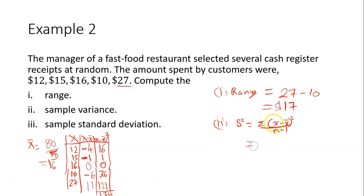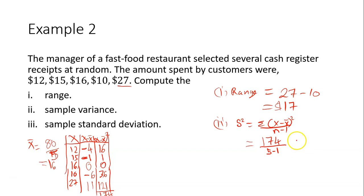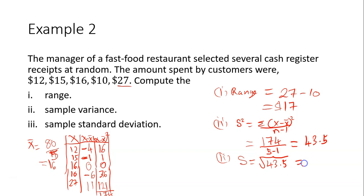Substituting: sigma (X minus X-bar) squared is 174, divided by n minus 1, where n is 5, so divided by 4. 174 divided by 4 gives 43.5. The sample variance is 43.5. For part three, the sample standard deviation is the square root of 43.5, which gives 6.595, or approximately 6.6.